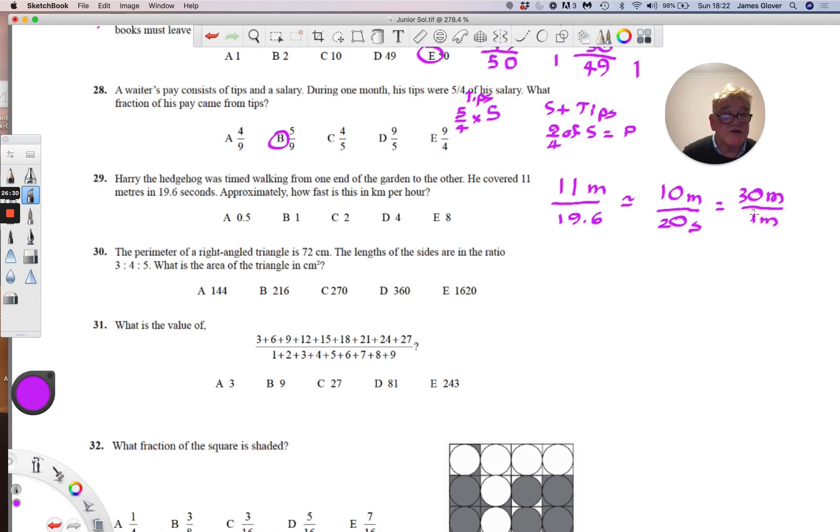And if you multiply top and bottom of this by 60, we'll get 1800 meters in one hour. And that's approximately two kilometers per hour.